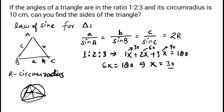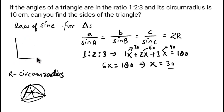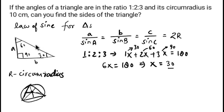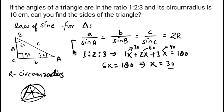Let me draw this right triangle. The 90° angle is at one vertex, 30° at another, and 60° at the third. The side opposite the 30° angle is a, the side opposite the 60° angle is b, and the side opposite the 90° angle is c. We are given the circumradius R = 10 centimeters.